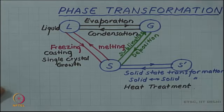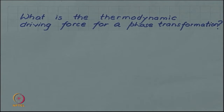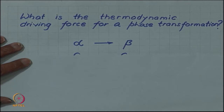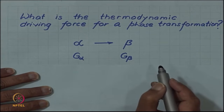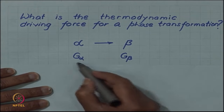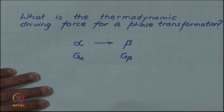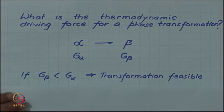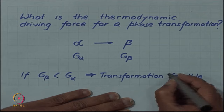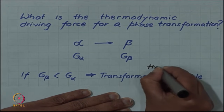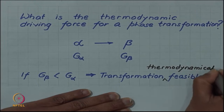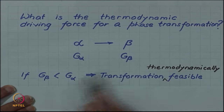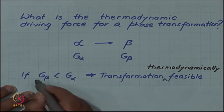Let us now look at the question of what is the thermodynamic driving force of a phase transformation. By driving force we mean that when a phase alpha is transforming into beta, the free energy of the two phases will be different. The alpha phase has a free energy G-alpha whereas the beta phase has a free energy G-beta. The phase transformation will be thermodynamically feasible only if the final product phase G-beta has a lower free energy than the starting phase alpha.